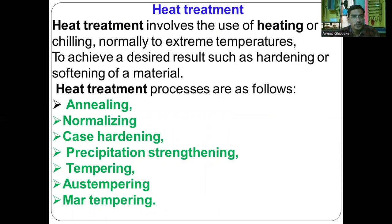Then tempering is also a heat treatment process. After martensitic phase formation, the tempering will remove the retained austenite and stresses in the metal. These are the various heat treatment processes that are carried out.